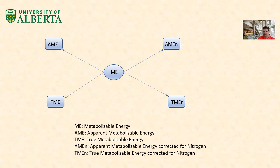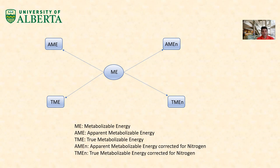When we are talking about metabolizable energy in poultry nutrition, we have four different types of ME or metabolizable energy. First is AME or apparent metabolizable energy. We have TME or true metabolizable energy, AMEN or apparent metabolizable energy corrected for nitrogen — or we can say corrected for zero retention of nitrogen — and TMEN or true metabolizable energy corrected for nitrogen.